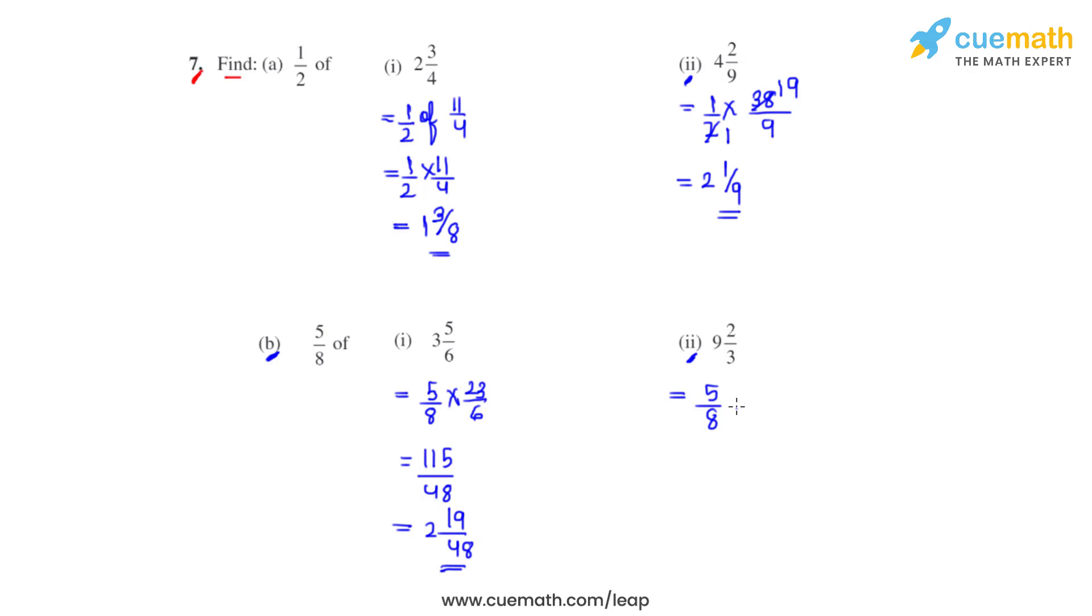Similarly, 'of' is replaced with a multiplication sign. Converting this mixed fraction into an improper fraction, 3 9s are 27, 27 plus 2 is 29, so we get it as 29 over 3. The product we get as 145 over 24. Now dividing 145 by 24, we get the quotient as 6 and the remainder as 1. So the mixed fraction for this will be 6 1/24. And this is how we solve this problem.